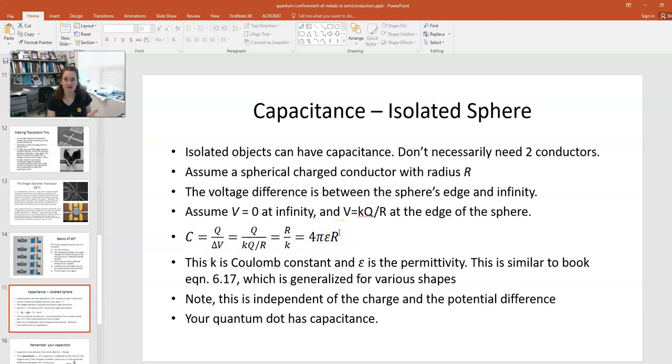Now, if you have a shape that's not a sphere, that's okay. All it does is change the number here out front. It's still going to be dependent upon the characteristic dimension of your object and some constant numbers. So remember that the capacitance is something that depends upon the geometry of the object. Now, your quantum dot does have capacitance. It could be a little sphere, it could be a little disc, but anyway, it has a capacitance to it.